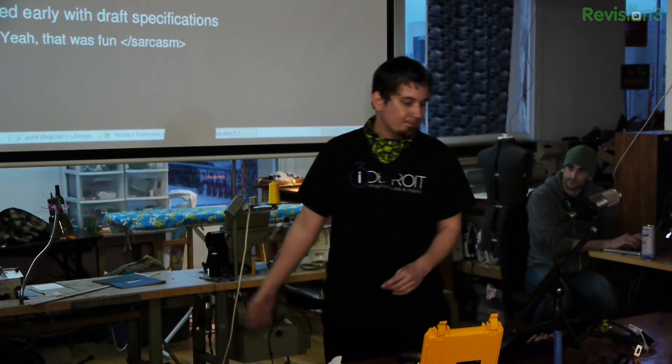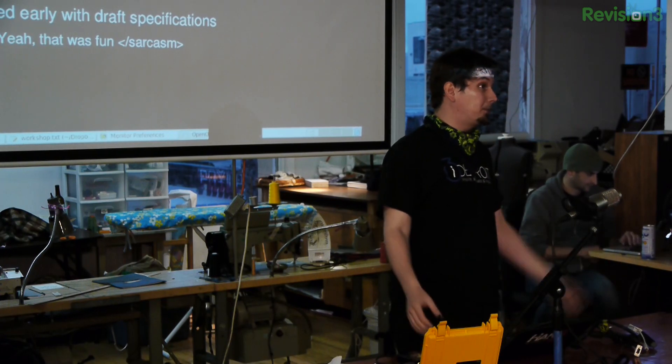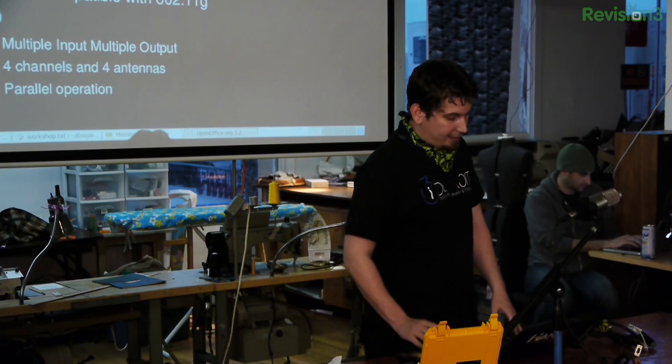Since then, 802.11g has come on the scene. It's best of both worlds between A and B, in that it uses the awesome OFDM stuff that we talked about in A on the 2.4 GHz spectrum of B. So it may have some problems in dense areas like San Francisco with overlapping channels and things like that. And sure, there was a whole early adoption of a draft specification thing, but otherwise, it's actually a pretty cool technology.